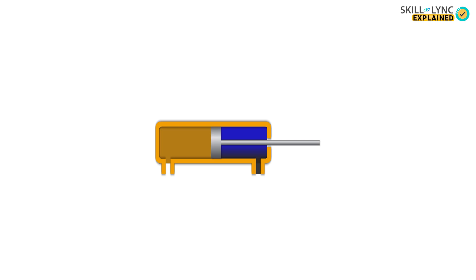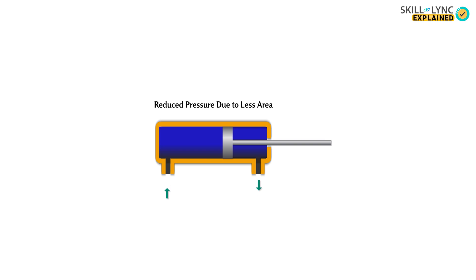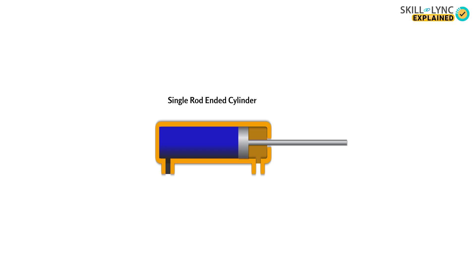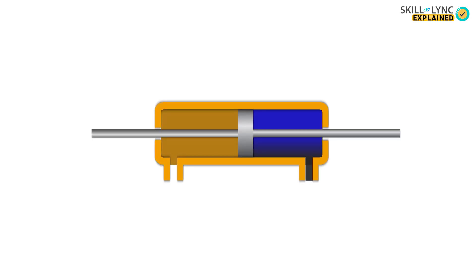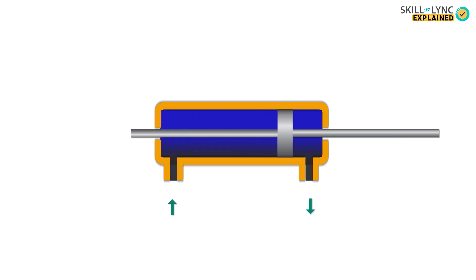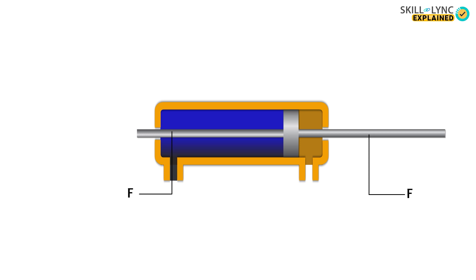You might have noticed the single rod in the double acting cylinder. This rod covers some area on the piston where it is connected, and due to this reduction in area, the pressure exerted on the piston while retracting is reduced. Such cylinders are called single rod ended type. This imbalance of pressure during extension and retraction can be overcome by adding another rod on the opposite side of the piston, providing equal forces in both directions. Such cylinders are called double rod ended cylinders.